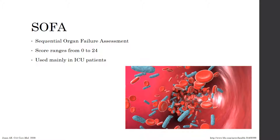The SOFA score, or Sequential Organ Failure Assessment, is another method of identifying signs of sepsis. Scores range from 0 to 24 and are based on various measures of organ function organized by system, including lungs, cardiovascular, liver, central nervous system, coagulation, and renal. The higher the score, the higher the chance of mortality. The downfall of using the SOFA score is that it requires laboratory tests, which make it difficult to complete a quick assessment of a patient. Thus, it is very rarely used in the emergency department and is used mainly in ICU patients.